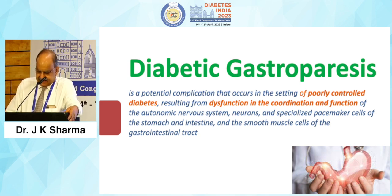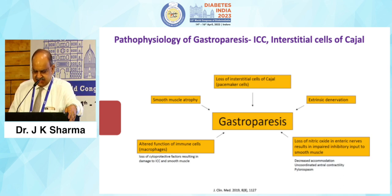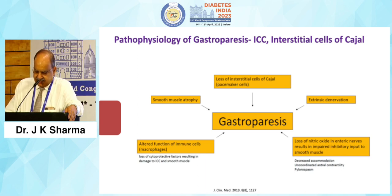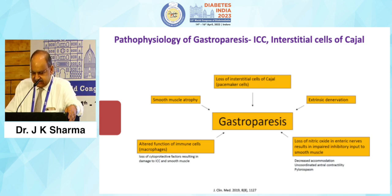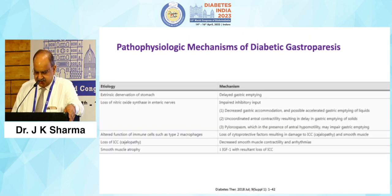The neurons and specialized pacemaker cells of the stomach and intestine and the smooth muscle cells of the gastrointestinal tract are involved. The pathophysiology includes loss of the interstitial cells of Cajal — the pacemaker cells — smooth muscle atrophy, extrinsic denervation, altered function of immune cells such as macrophages, and loss of nitric oxide in the enteric nerves, resulting in impaired inhibitory input to the smooth muscles. These are all causes of diabetic gastroparesis.